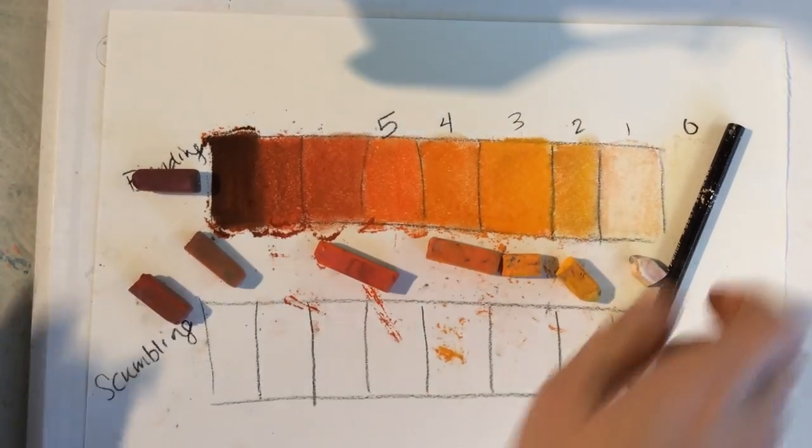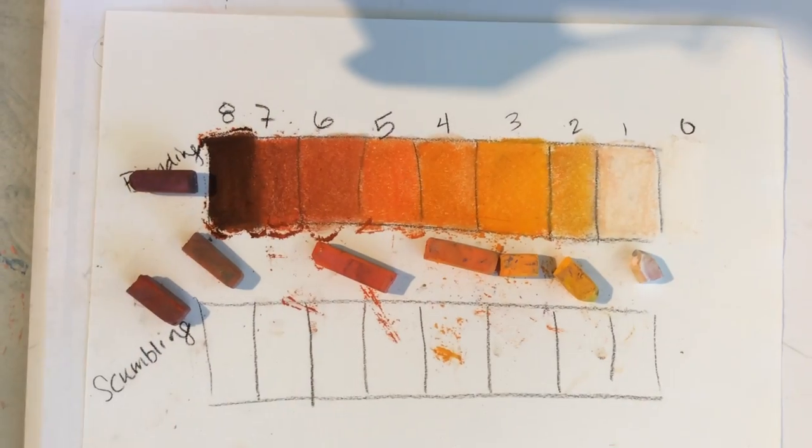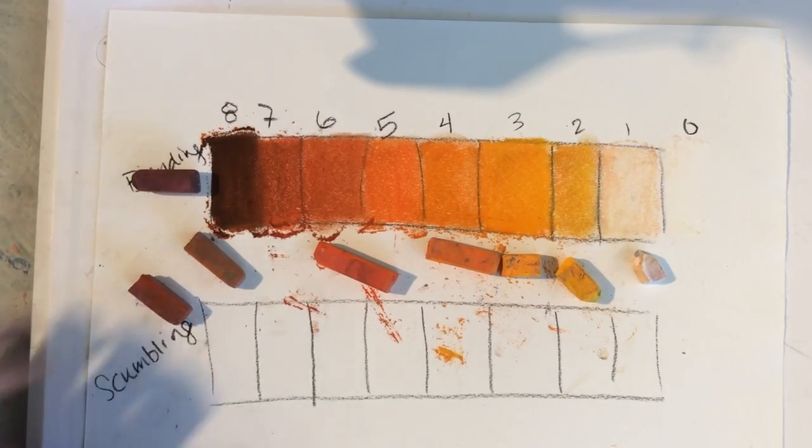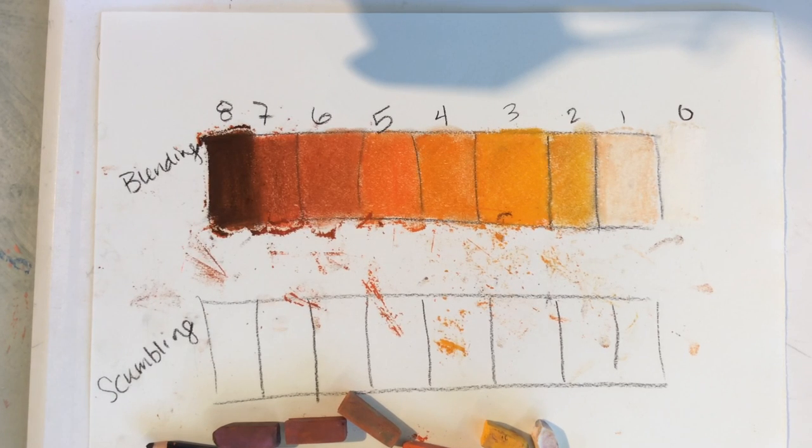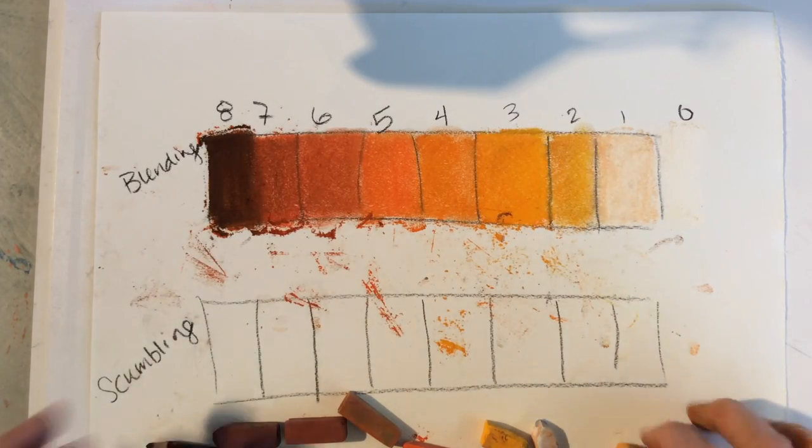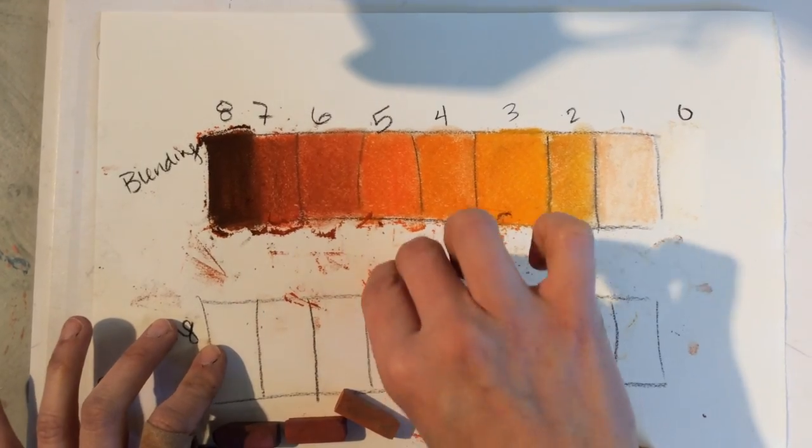All right, so now we have eight, seven, six, five, four, three, two, one. Beautiful. Now using the same color family I'm going to teach you what scumbling is. So scumbling, this is the same process except for one step, and this step is blending. We do not blend when we scumble. When we scumble we use just the edge of the chalk.